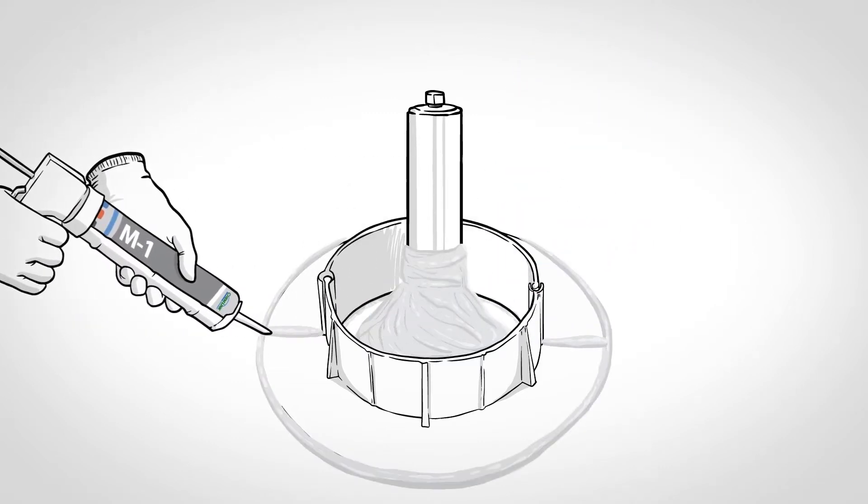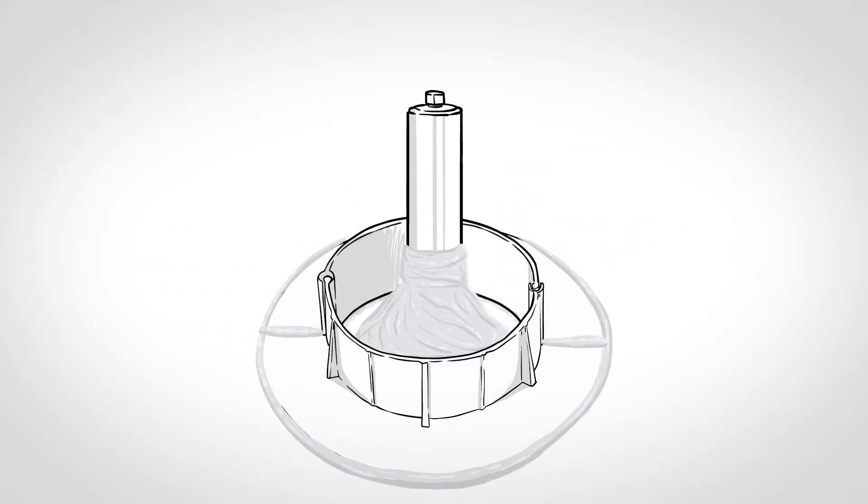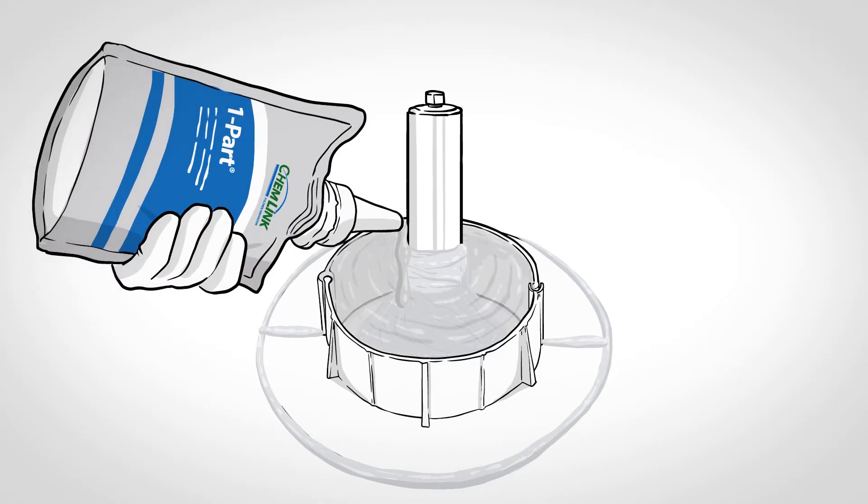Apply M1 around the outside of the eCurb and spread the sealant for a smooth surface. Fill the remaining space with one part sealant.